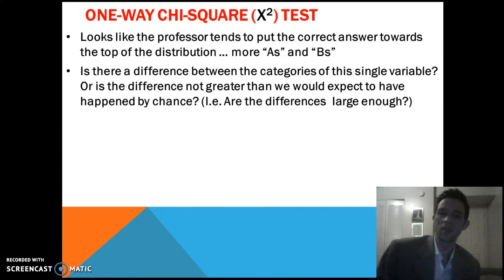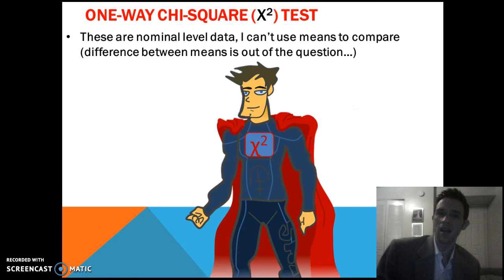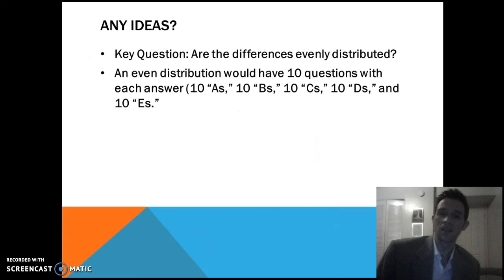So again, we can tell that this professor favors A's and B's. And because we have nominal-level data, we can't really use a two-mean test. So we have chi-square to the rescue here to bail us out and give us a way to do this. And if you think about this yourself first, how would you do this? How would you mathematically compute or quantify if we have a statistically significant difference? And the answer comes back to this idea of expected value.